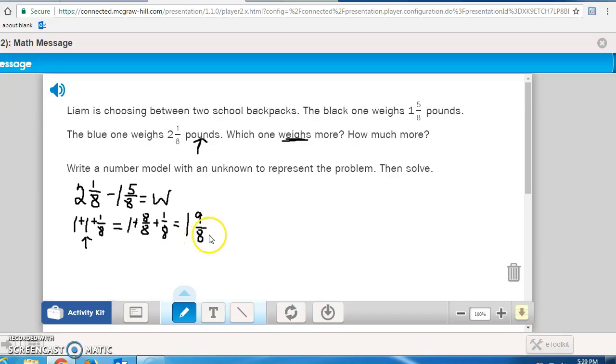is going to equal 1 and 9/8. Now that I have that figured out, now I can subtract the 1 and 5/8. First, I'm going to subtract the whole numbers. 1 minus 1 is zero. Then I'm going to subtract the fractions. 9 minus 5 is 4. And once again, my denominator stays the same as eighths. So it weighs 4/8, 4/8 what? 4/8 pounds. That is my answer.